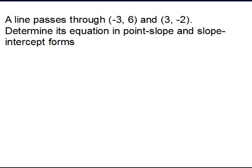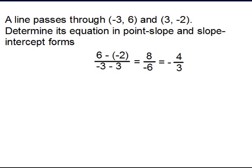Here's one particular one. You have a line passing through two points. Determine the equation of this line in point-slope and slope-intercept forms. This is not a new idea — you have seen this before. The first thing you'll want to do, since we need both point-slope and slope-intercept, is determine the slope first using your ordinary slope formula. Put your y values on top, x values on the bottom, subtract, reduce, and you get negative 4 thirds.